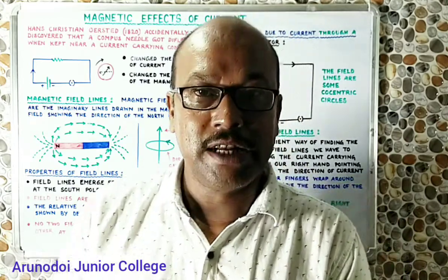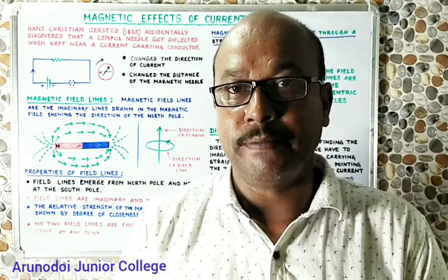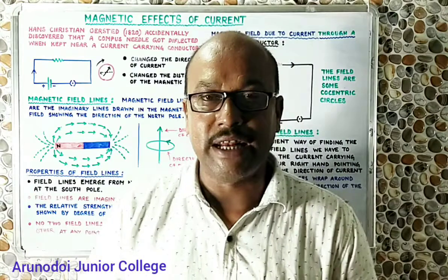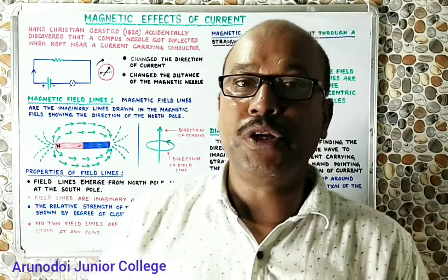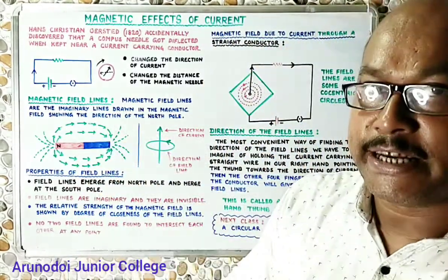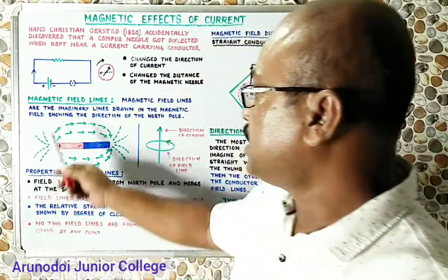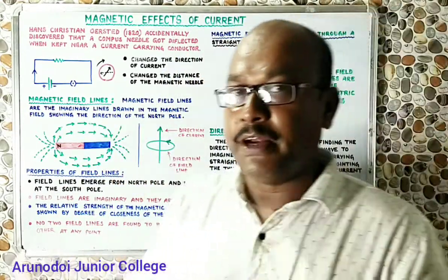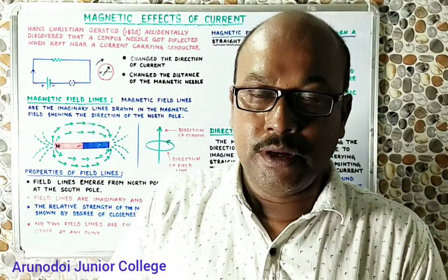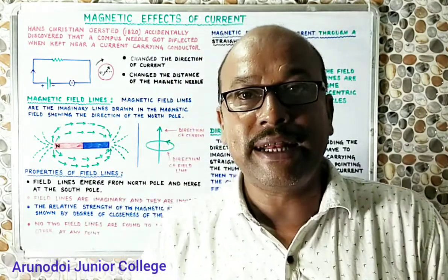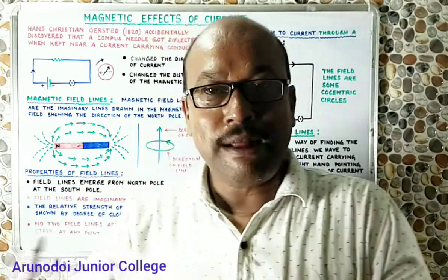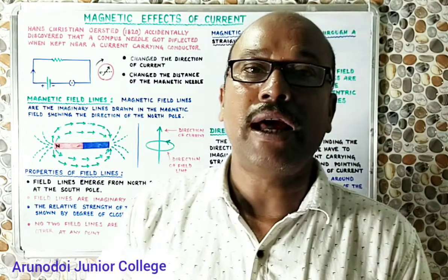This finally proved that a current-carrying conductor starts behaving like a magnet. People began understanding that there is a definite relation between electricity and magnetism, and since they are interrelated they are studied together as electromagnetism. Now, a magnet has a magnetic field around it. The magnetic field is the region around a magnet within which the magnet can attract other magnetic substances.